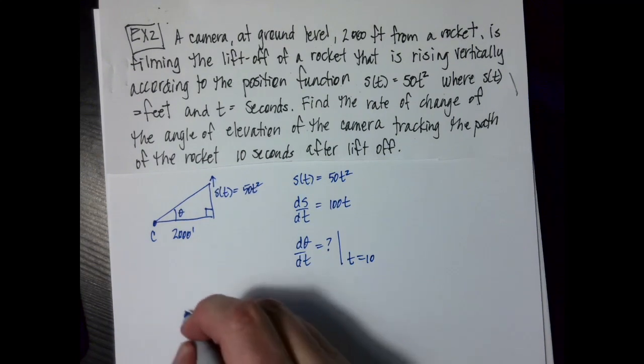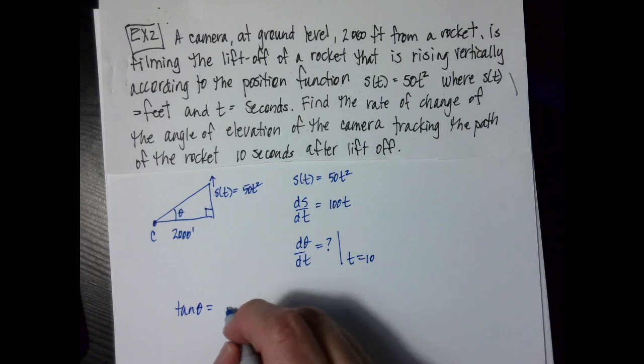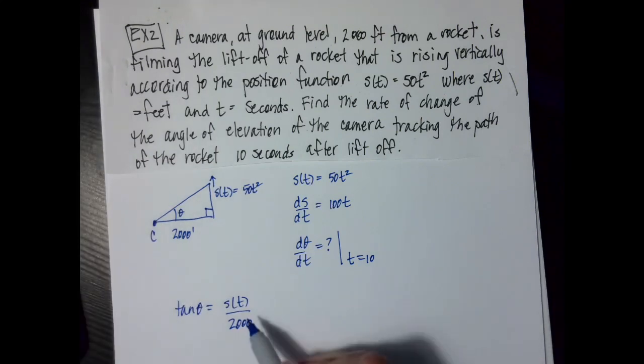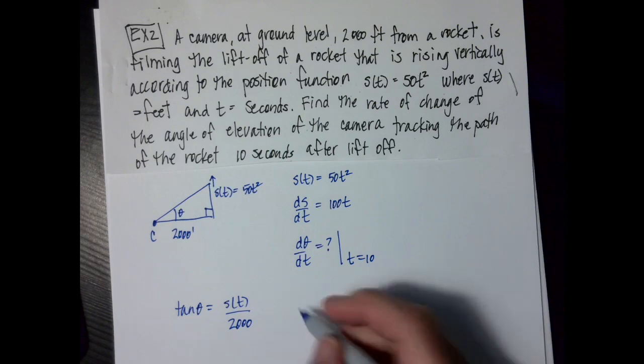So now what I need is an equation that relates my theta and my position function. So I'm going to say that tangent of theta equals s(t) over 2,000. Okay, so now as I substitute things in, I'm actually going to not substitute yet. And I'll show you what I'm going to do next.